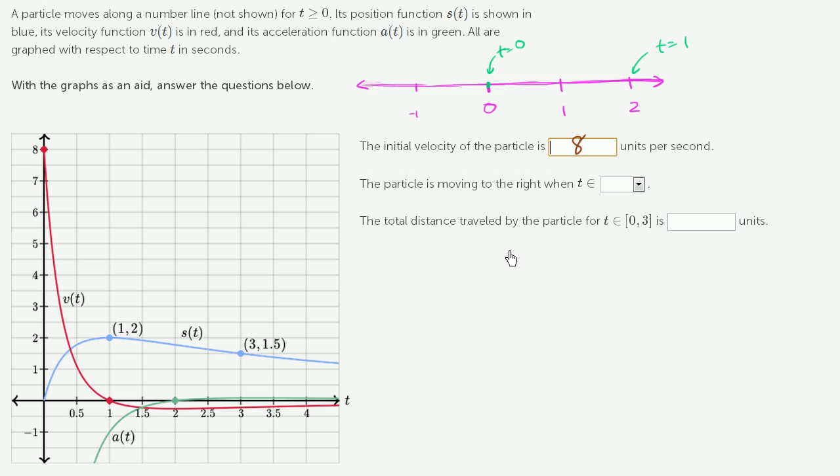The particle is moving to the right when t is in the interval, and since they're doing this as a member of, they really want this in the set notation, t is a member of the interval. Well, when are we moving to the right? We already went over that. There's a couple of ways to think about it.